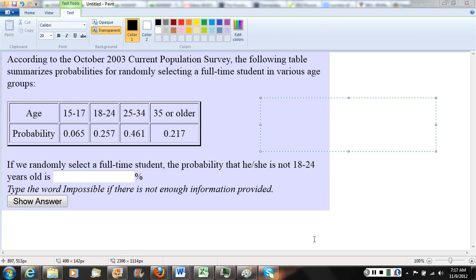They did an October 2003 population survey, and the following table summarizes probabilities for randomly selecting a full-time student in various age groups.